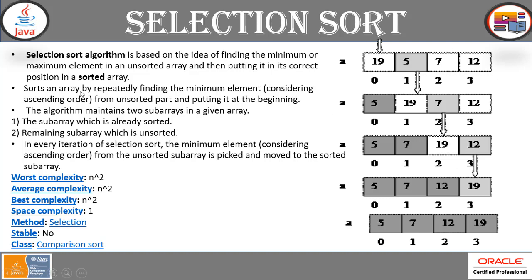Sorting an array by repeatedly finding the minimum element — by default in ascending order — from the unsorted part and putting it at the beginning is called selection sort. This algorithm maintains two sub-arrays: one that is already sorted and one remaining sub-array that is unsorted. In every iteration, the minimum element from the unsorted array is picked and moved to the sorted sub-array.